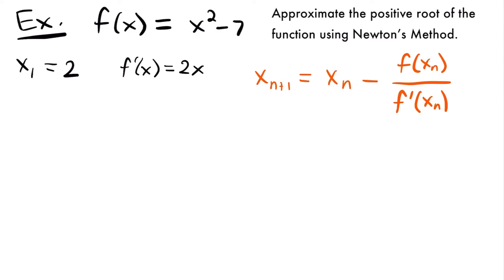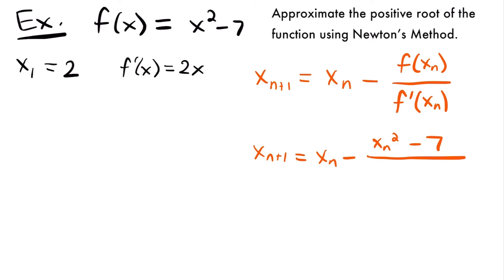Let's find the derivative of our function. f prime of x is going to equal the derivative of x squared, which is 2x — multiply the exponent down and subtract 1. The derivative of negative 7 is 0 because it's a constant. So our derivative is f prime of x equals 2x. Now let's rewrite our Newton's method formula to represent our specific function and its derivative: x sub n plus 1 equals x sub n minus (x sub n squared minus 7) divided by (2 times x sub n).